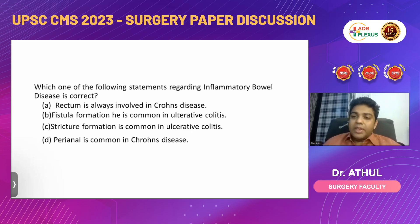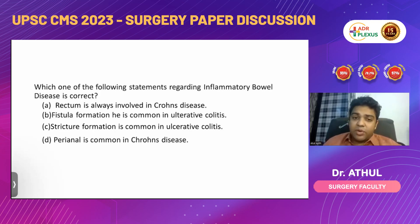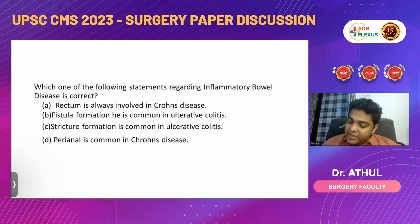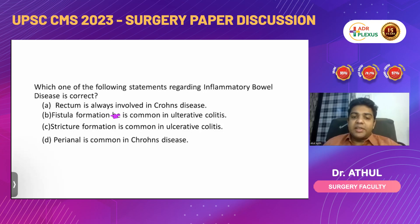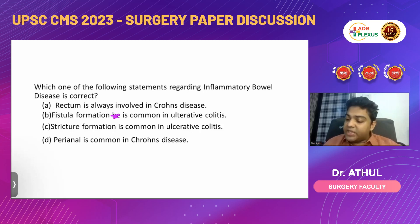The first question: which one of the following statements regarding inflammatory bowel disease is correct? Option A: rectum is always involved in Crohn's disease. Option B: fistula formation is common in ulcerative colitis. Option C: stricture formation is common in ulcerative colitis. Option D: perianal manifestations are common in Crohn's disease. Let's have a comparison between Crohn's disease and ulcerative colitis, which we already discussed in class with a long table.